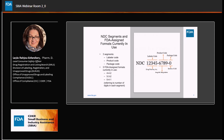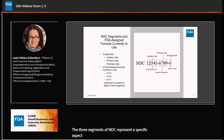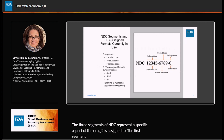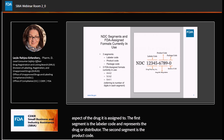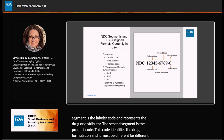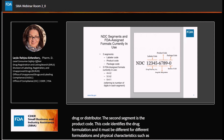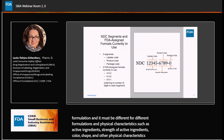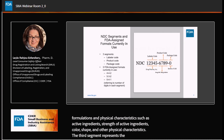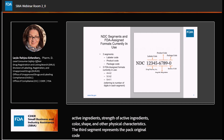The three segments of NDC represent a specific aspect of the drug it is assigned to. The first segment is the labeler code and represents the drug manufacturer or distributor. The second segment is the product code, which identifies the drug formulation and must be different for different formulations and physical characteristics, such as active ingredients, strength, color, shape, and other physical characteristics. The third segment represents the package code, which identifies the package size and type.